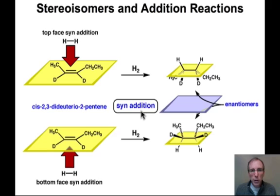To summarize what we've learned in this example, syn addition, addition to the same face, defines the relative stereochemistry of those adjacent stereocenters. Whether that syn addition takes place from the top face or the bottom face will determine which of the enantiomers result. Under normal circumstances, the addition is equally likely from the top and bottom face, meaning that we'll end up with equal amounts of both enantiomers. In other words, we'll end up with a racemic mixture.